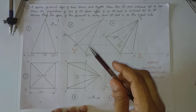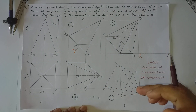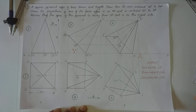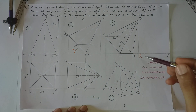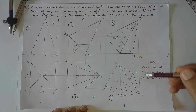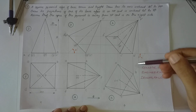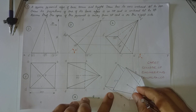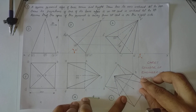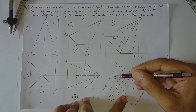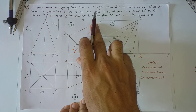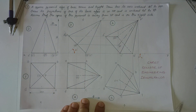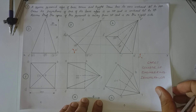In diagram number five, the base head is tilted in this way because it is mentioned that the apex of the pyramid is away from VP. Here the apex is away from VP, meaning away from the XY line in the top view. Nearer to VP means the apex must be nearer to the XY line in the top view. If the diagram is tilted the other way, the apex comes nearer to the XY line, which means nearer to VP. Since the question requires the apex to be away from VP, I have placed it in this way.